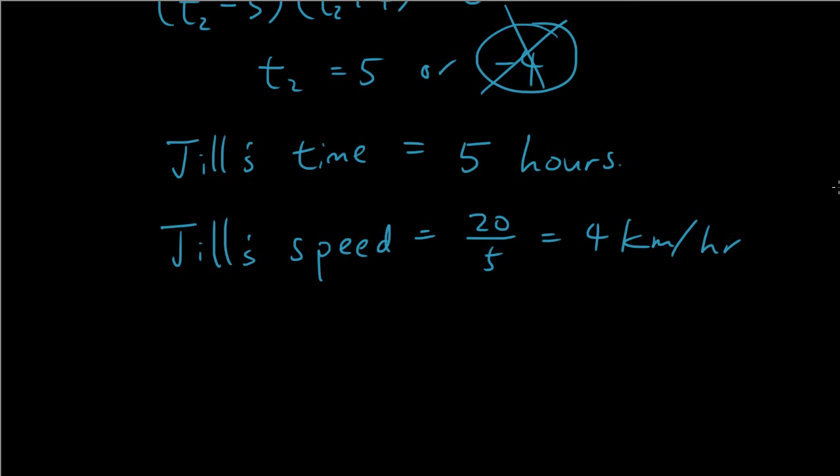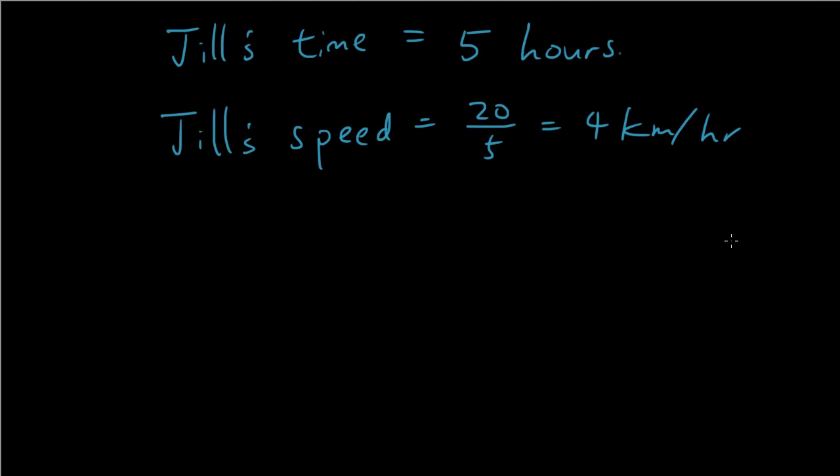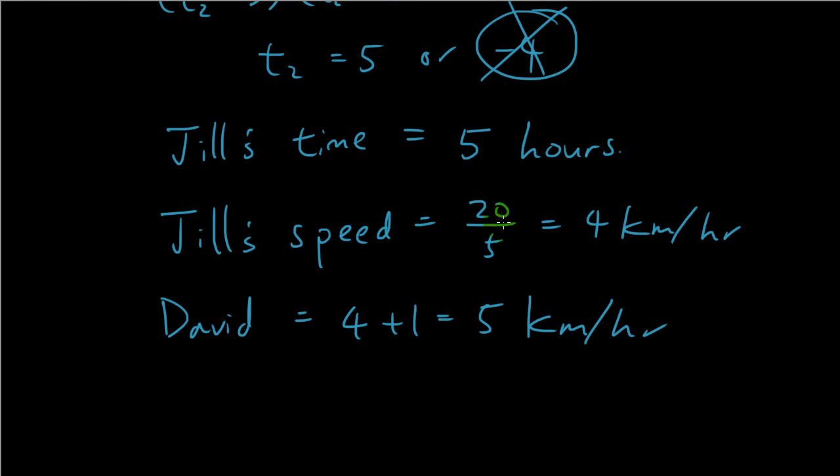We have the other guy. We got David is one kilometer per hour faster than Jill. So David is equal to four plus one, which is five kilometers per hour. And this works because if he walks at five kilometers per hour, he will finish the 20 kilometer trip in four hours, which is one hour less than Jill, which is what the problem said.